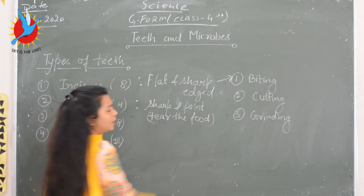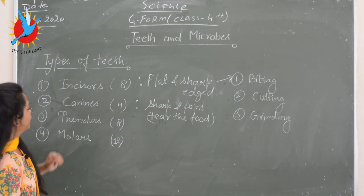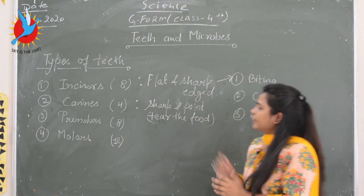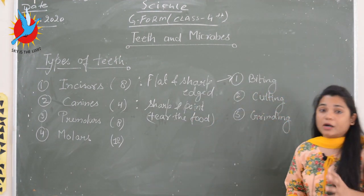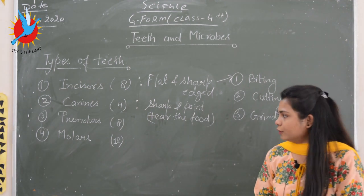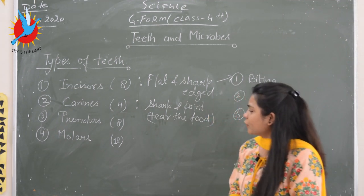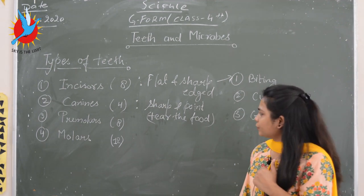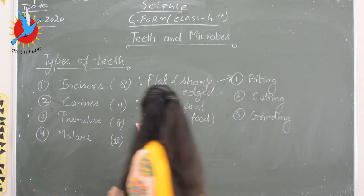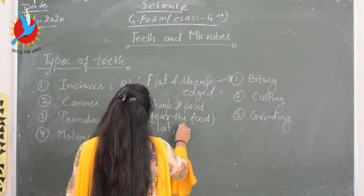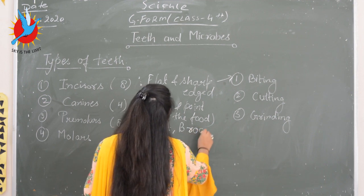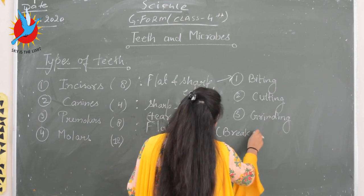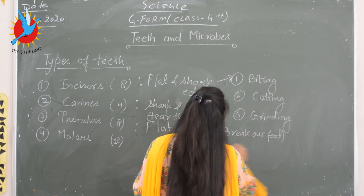Premolars are present next to the canines. They are broad, flat, and help us to chew our food and break it into fine parts. They are eight in number — four in each jaw, two on each side of the jaw.